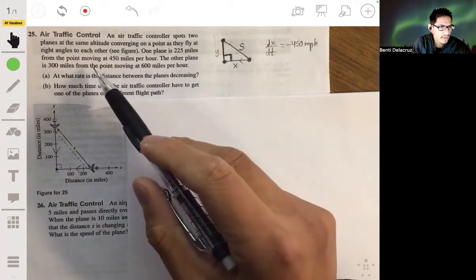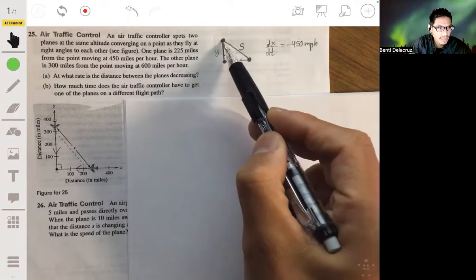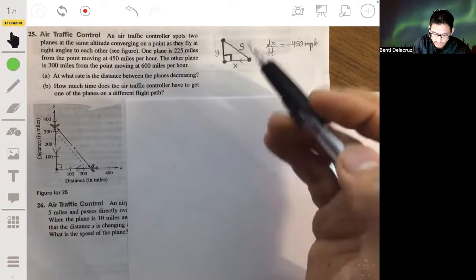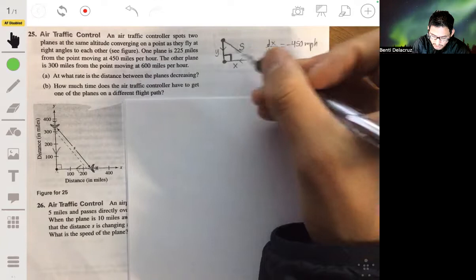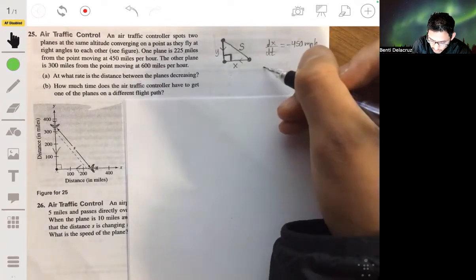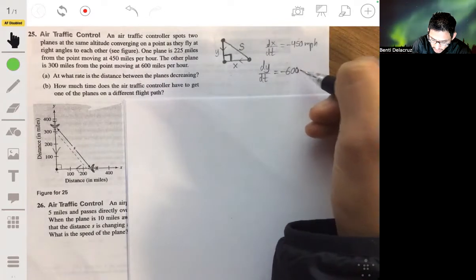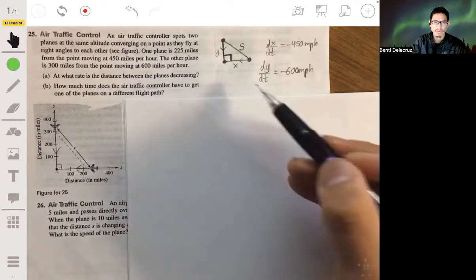Now the other plane is 300 miles away, so this plane, and it's moving 600 miles per hour. So it's moving downward in the Y direction. So then we're going to have the change in Y with respect to time equal to negative 600, because again, downward represents moving in the negative direction with respect to Y.